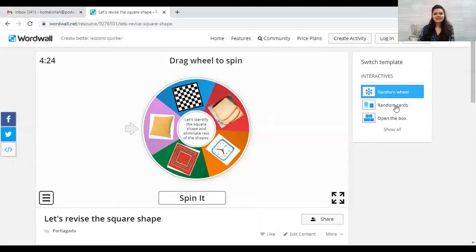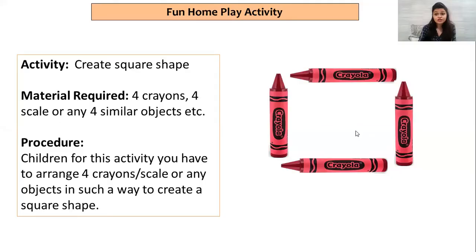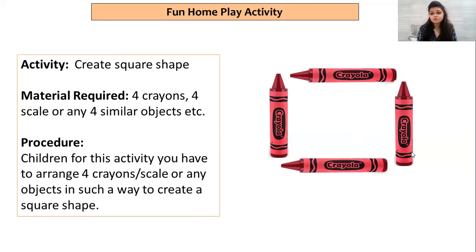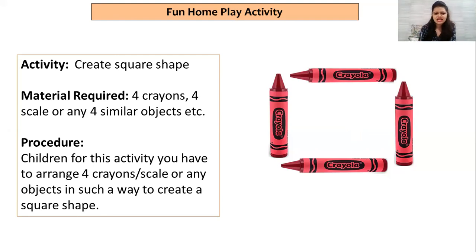That was a fun game. Wasn't it? Yes, did you like it? I just loved it. It was an amazing game. Now let's see what do we have to do at home. The fun home play activity — you have to take four crayons. You have to take four crayons or any object in four. But the object should be of similar size, because all the sides of a square are the same. That is why we are going to take any four objects of similar size and create a square shape. Just look here — how nicely they have created a nice square shape with help of the crayons.